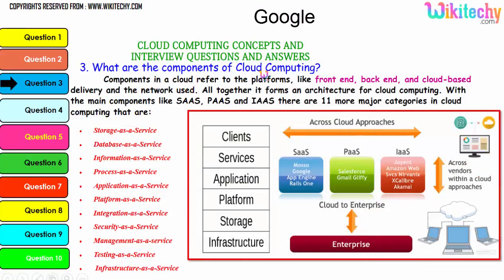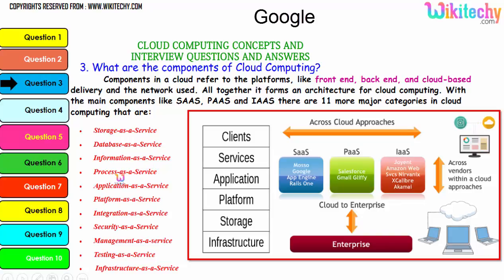Now let's talk about the components of cloud computing. Components in the cloud refer to platforms like front-end, back-end, cloud-based delivery, and the network used. Together they form the cloud computing architecture, with the main components being Software as a Service, Platform as a Service, and Infrastructure as a Service. There are 11 major categories in cloud: storage as a service, database as a service, information as a service, process as a service, application platform, integration, security, management, testing, and infrastructure.